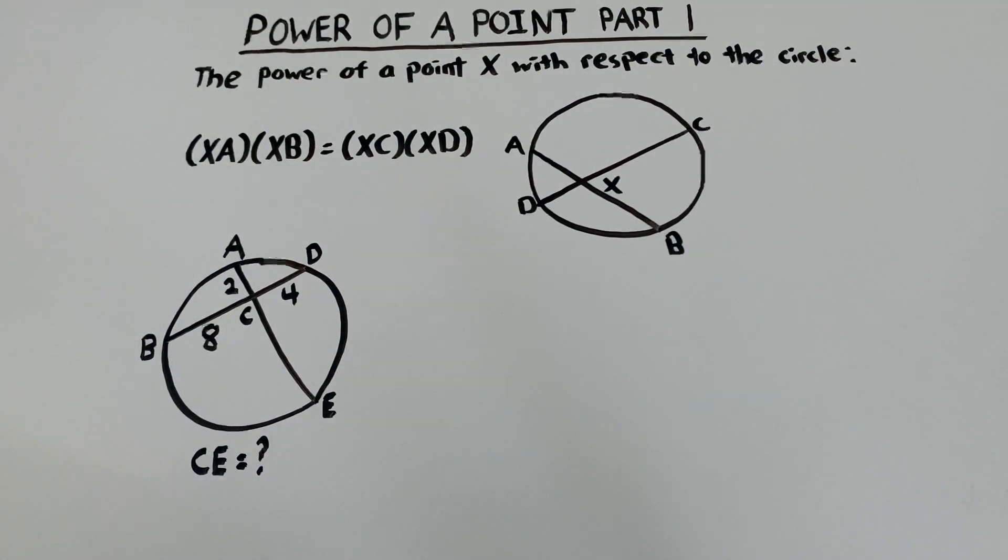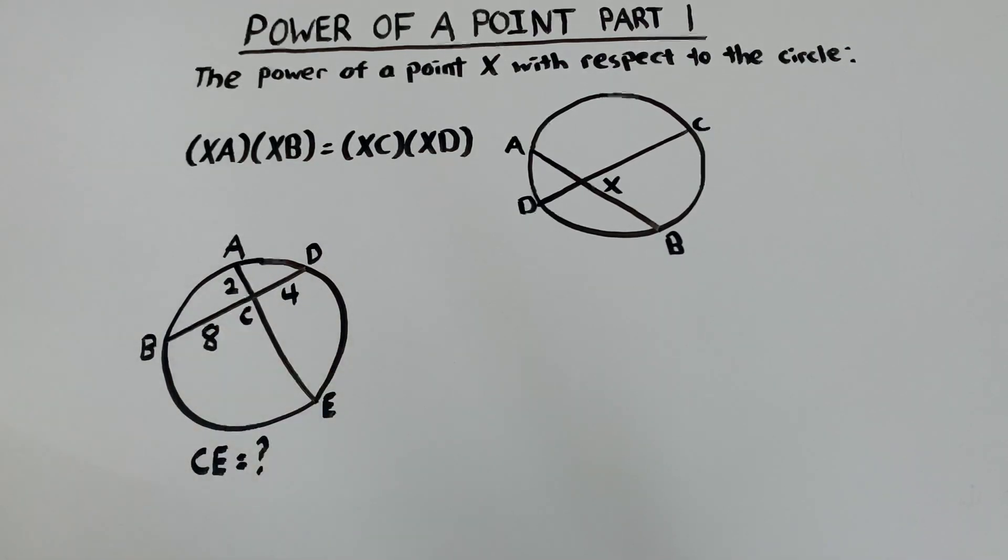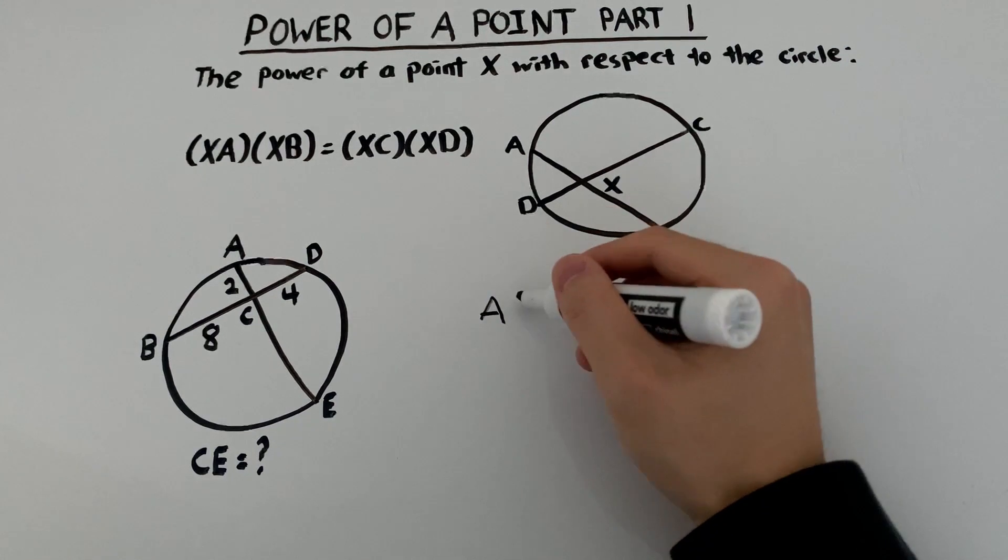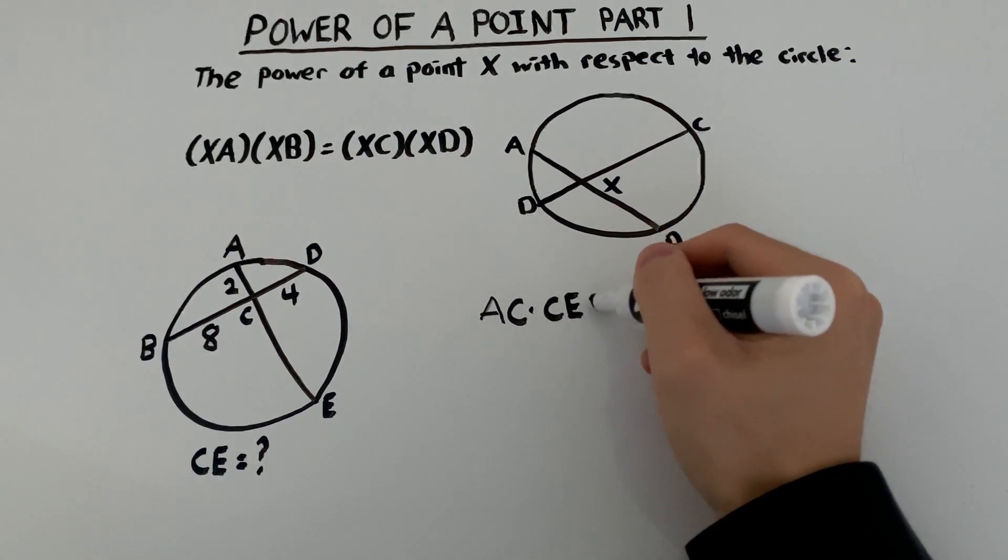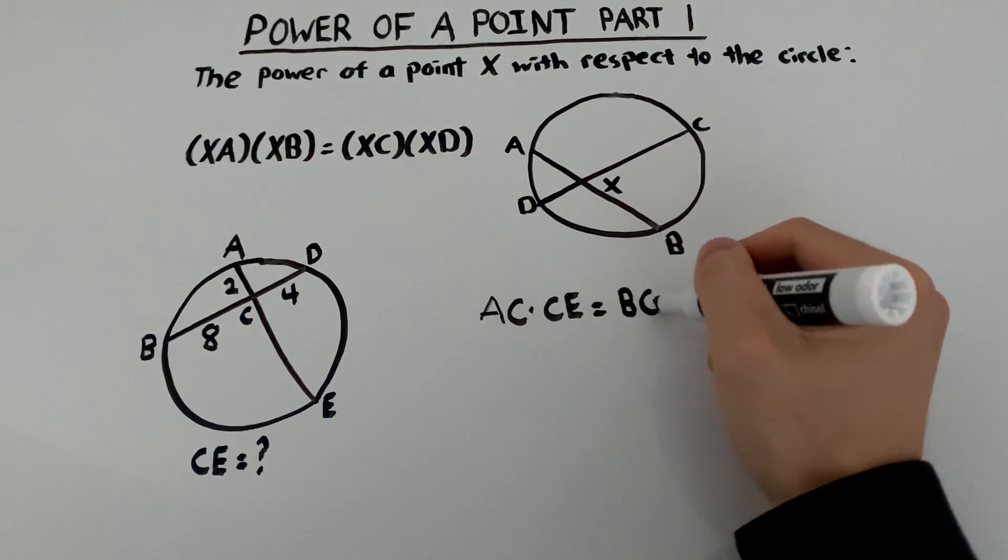So let's write out the power of a point relationship using point C. So AC times CE should be equal to BC times CD.